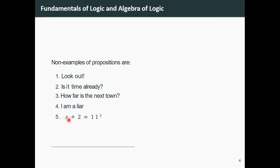Meanwhile, for number five, x + 2 = 11 cannot be quantified as a proposition because there's no specific value for x for which we can tell whether the equation is true or false. What about number four? Why do you think number four is a non-example of a proposition?